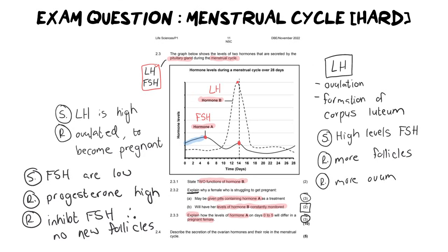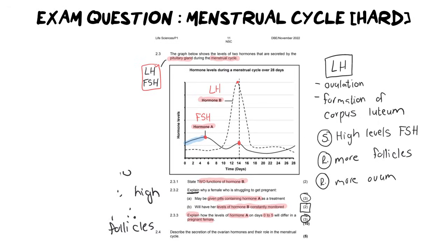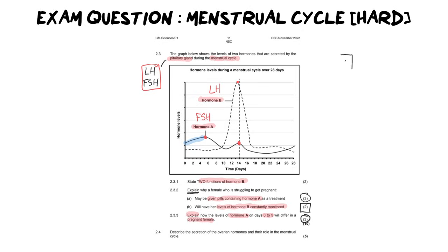Now, normally, I wouldn't do two questions in one video. But I'm going to do another question, which is going to be 2.4. And I thought it made the most sense to do this question because it's a continuation of the menstrual cycle and the hormones involved in it. But let's have a look at what 2.4 needs us to do. So, it says, describe the secretion of ovarian hormones and their role in the menstrual cycle for five marks.